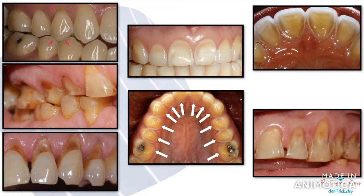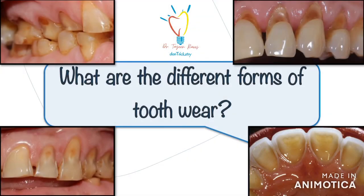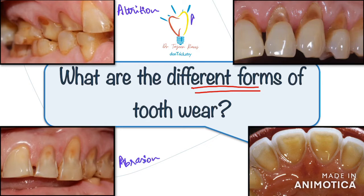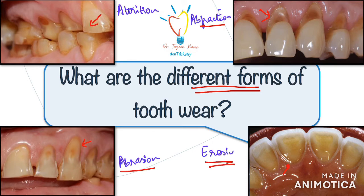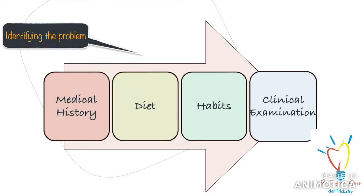So what should be our protocol to manage tooth wear? There are essentially four forms or types of tooth wear that we encounter frequently: attrition, abrasion, abfraction, and erosion. In this video, I am going to focus only on the latter three because attrition is a different ballgame altogether and much more complicated — I will make another video specifically for that. Here we will be discussing abrasion, abfraction, and erosion, also known as non-carious cervical lesions.